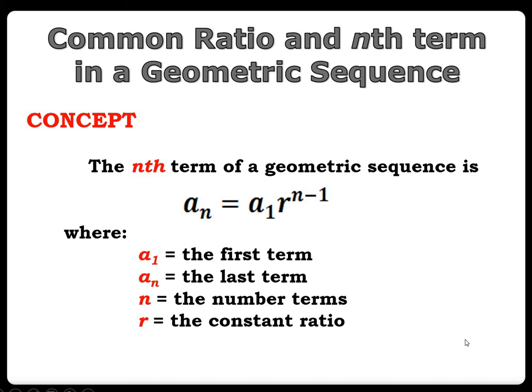Common ratio and the nth term in a geometric sequence. The nth term of a geometric sequence is a_n = a_1 times r raised to n minus 1, where a_1 is the first term, a_n is the last term, n is the number of terms, and r is the constant ratio.